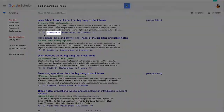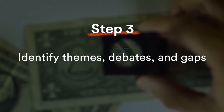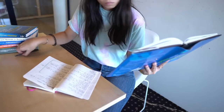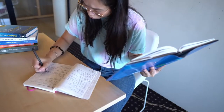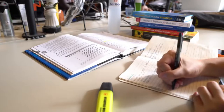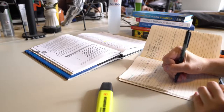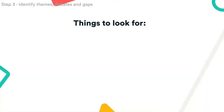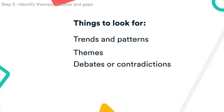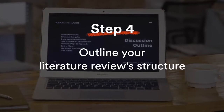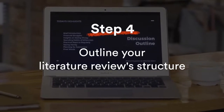You should also pay attention to the citation count on Google Scholar — if the count is high, the source is probably important and you should include it. Step three: identify themes, debates, and gaps. As you read, take notes and pay attention to the connections between different sources. This way you can organize your literature review's arguments and structure a lot easier. Look for trends and patterns in theories, methods, or results.